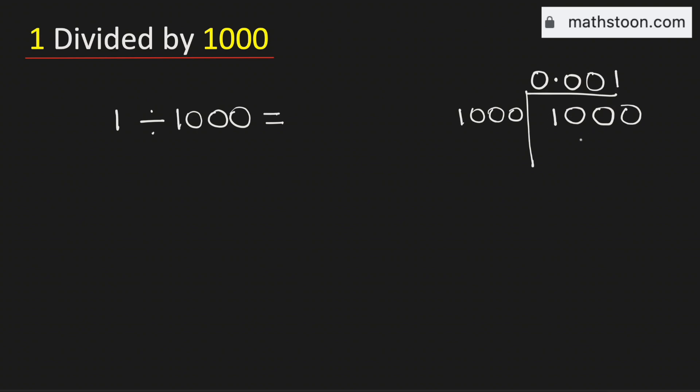Now see that 1000 times 1 is equal to 1000. Now subtract we will get zero.